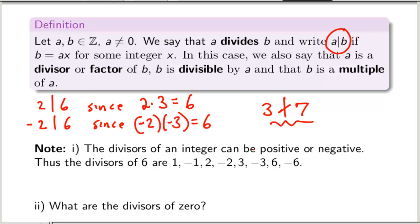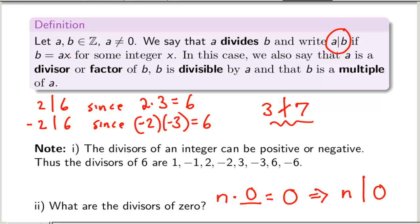The divisors of an integer can be positive or negative. So the complete list of divisors of 6 would be 1, negative 1, 2, negative 2, 3, negative 3, 6, and negative 6. What are the divisors of 0? If we let n be any number, then n times 0 equals 0, which would imply that n is a divisor of 0. So every integer is a divisor of 0, except we have the stipulation that a should not equal zero. So any non-zero integer is a divisor of 0.